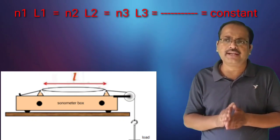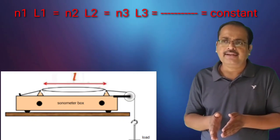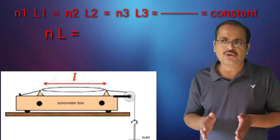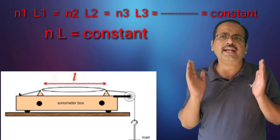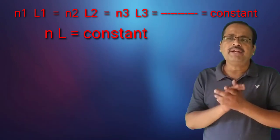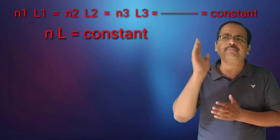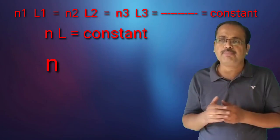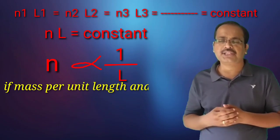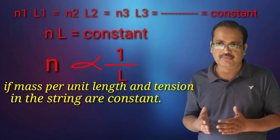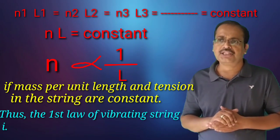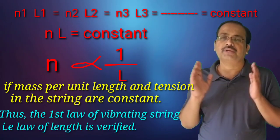Therefore, in general, N×L is equal to constant. The product of frequency and vibrating length is constant, or the fundamental frequency is inversely proportional to L, if mass per unit length and tension in the string are constant. Thus, the first law of vibrating string — the law of length — is verified.